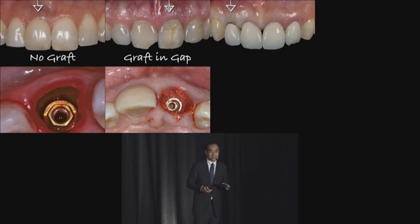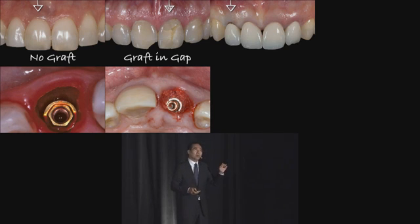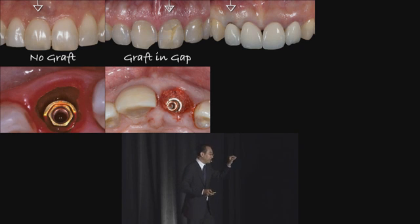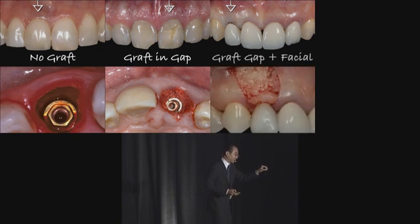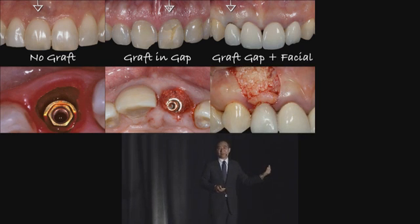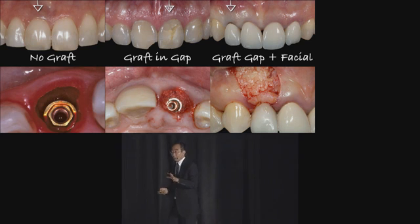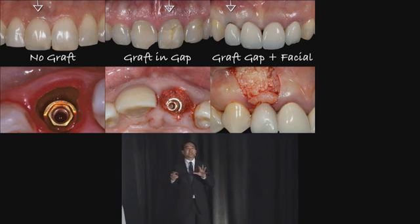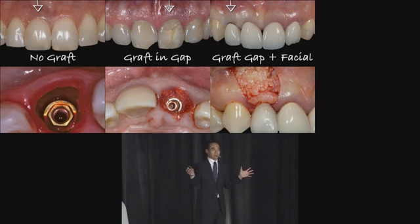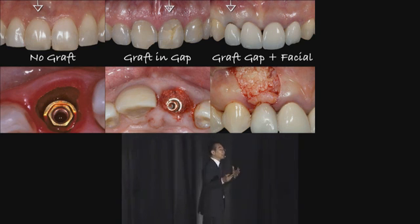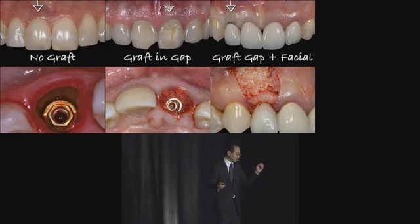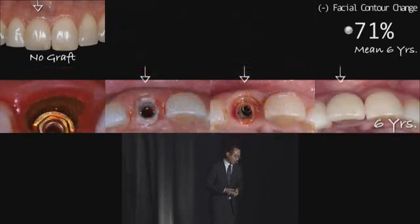More recently, in the last four years or so, not only after the implant is placed do I put bone graft in the gap, but I also put bone graft on the outside of the bony plate too. So those are the three ways to manage the gap in general. What works best? This is to-be-published material.